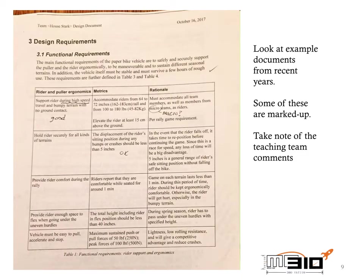The other really useful thing to do is to look at what previous teams have done when they were challenged to formulate requirements for paper vehicles. The paper vehicle challenge changes a little bit from year to year, but they're not all that different — they're still paper, they still have to support a human being, they still have to be pushed or pulled. You'll get some ideas by leafing through what different teams did, and you'll see notes from the teaching team about those requirements, which is definitely worth having a look at.